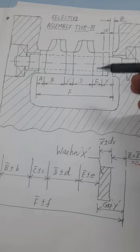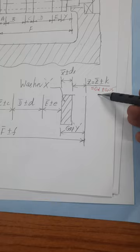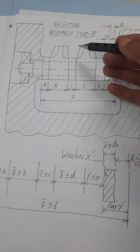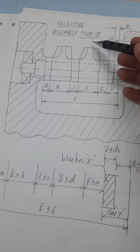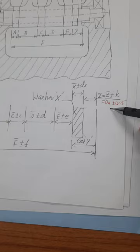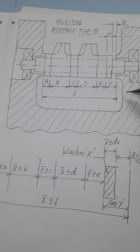I don't want to increase the cost of the assembly; at the same time, I want to maintain a very close axial play of 0.1 plus or minus 0.05. For that, the solution is using the Type 3 selective assembly. When you use Type 3 selective assembly, we can achieve a clearance in the close range of 0.1 plus or minus 0.05 without increasing the cost of the assembly.